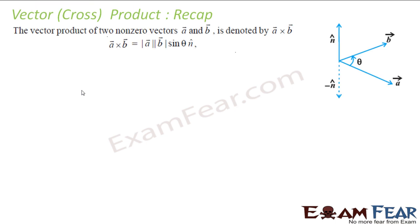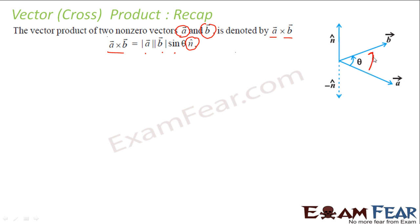Let's do a recap of the vector product. We have two non-zero vectors a and b. The cross product is denoted by a cross b, where a cross b equals magnitude of a times magnitude of b times sin theta, and the direction is n-vector. The n unit vector is nothing but a vector that is perpendicular to both a and b.